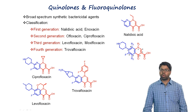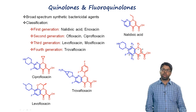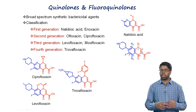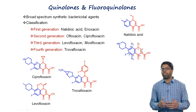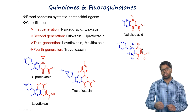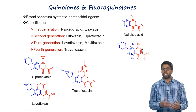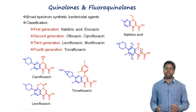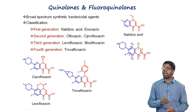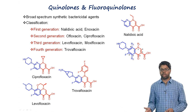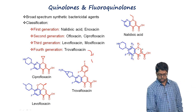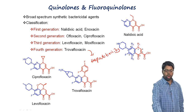Quinolones and fluoroquinolones are broad-spectrum bactericidal antibiotics. They inhibit DNA gyrase and topoisomerase IV, thereby inhibiting bacterial replication and killing the bacteria. Fluoroquinolones can be classified into generations: first-generation agents like nalidixic acid and enoxacin are highly effective against gram-negative organisms, while later generations become increasingly effective against gram-positive organisms as well.